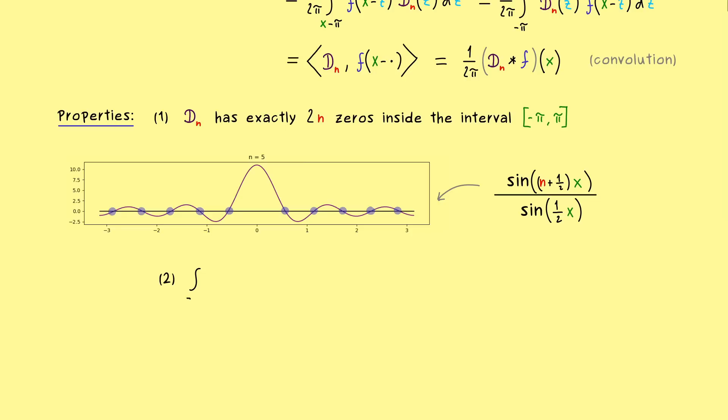Now maybe the second property is even more interesting, because we can also calculate the integral for each D_n. If you look at the plot above, you see we have to add up a lot of negative areas and a lot of positive areas as well. So it's not so clear what comes out here, but actually it's quite easy to calculate.